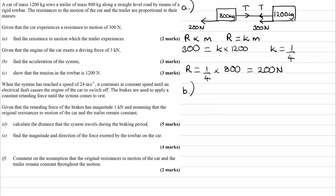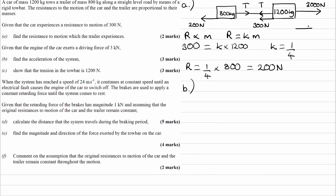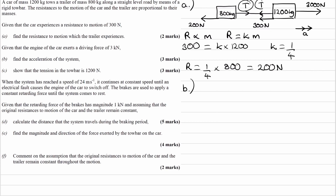For part B, we're told that the engine of the car exerts a driving force of 3,000 newtons, so I'll draw that on the diagram — 3,000 newtons forwards. We want to find out the acceleration of the system. We can do this a few different ways: we can consider the individual objects, get equations of motion for each, and both equations will involve T as well as A, then solve simultaneously to work out tension and acceleration.